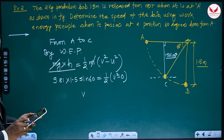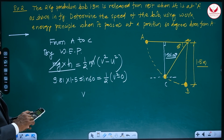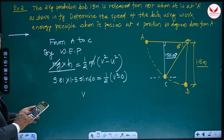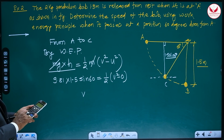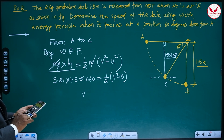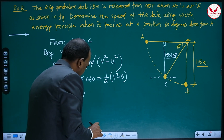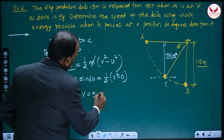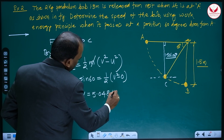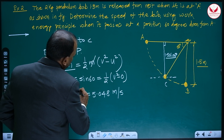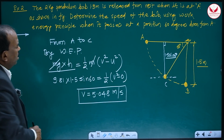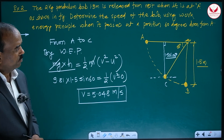Work-energy principle problems are straightforward. Solving: 9.81 × 1.5 × sin60 × 2 gives V² = 25.48, so V equals approximately 5.048 meters per second. Like this, you can easily solve such examples of kinetics of curvilinear motion. Thank you.